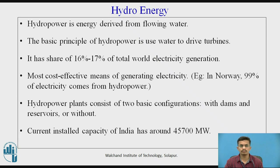The third most commonly used renewable energy source is hydro energy. Hydropower is energy derived from flowing water, with the basic principle of using water to drive turbines. Hydro energy accounts for 60–70% of total world electricity generation and 50–60% of electricity generated by renewables. It is among the most cost-effective means of generating electricity — for example, in Norway, 99% of electricity comes from hydropower. Hydropower plants consist of two basic configurations: with dams and reservoirs, or without. The currently installed capacity of hydropower energy in India is around 45,700 MW.